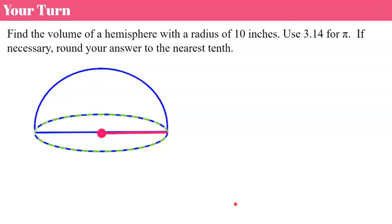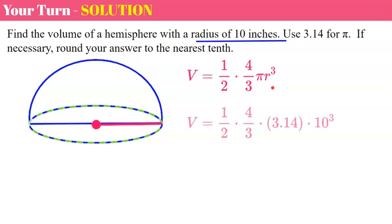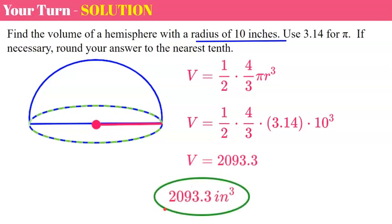Now it's your turn — find the volume of the hemisphere and come back when you're done. Welcome back. We use the sphere formula and multiply by one-half. Our radius is 10, so 10 cubed equals 1,000, times 3.14, times four, divide by three, then divide by two. Your volume is 2,093.3 inches cubed.